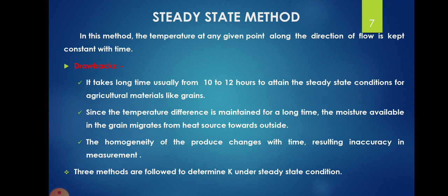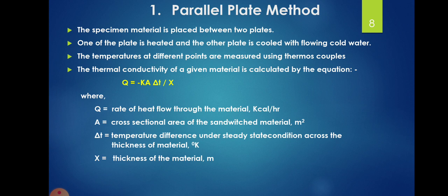These three methods are followed to determine k under steady state conditions. The first is the parallel plate method. In this method, the specimen whose thermal conductivity is to be determined is placed between two plates. One plate is heated and the other plate is cooled with flowing cold water.